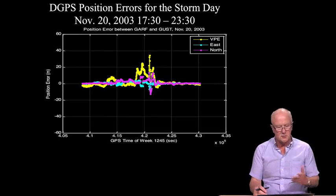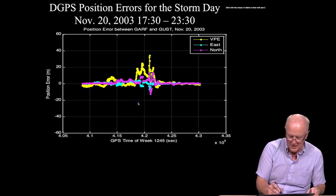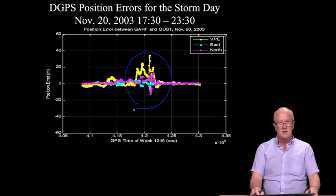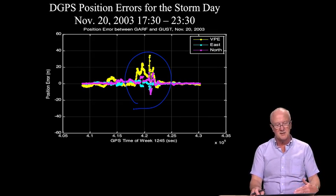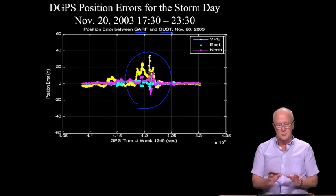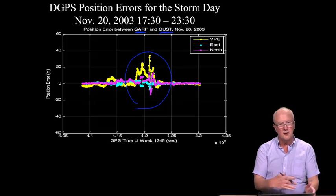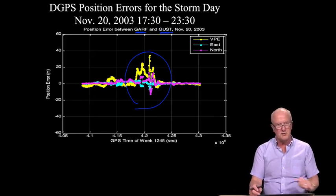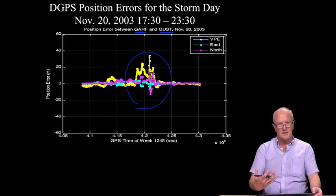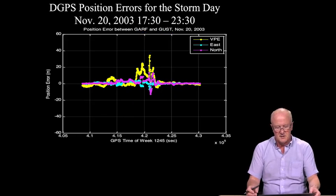However, if we go to a storm day, even differential GPS has a tough time — particularly during this period when those steep gradients existed in the Ohio area. Garf and Gust are two GPS receivers in Ohio, and what we're seeing is the error in their relative position as calculated by differential GPS, over the same six hours but now on November 20th, the day following. November 19th was very, very stormy and had a huge impact on differential GPS performance. We're looking at errors of tens of meters.